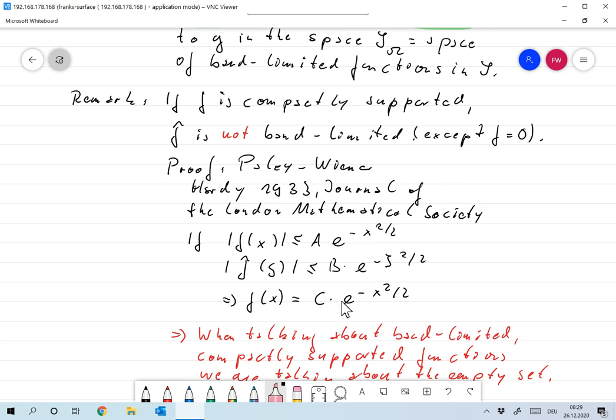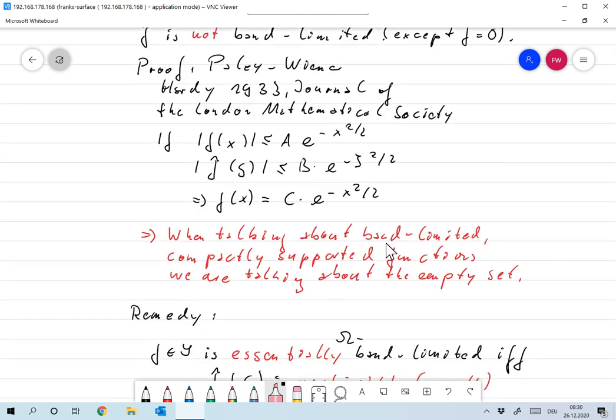Okay, so that's bad. And so we find that if we're talking about band-limited, compactly supported functions—and we always had compactly supported functions up to now; we always assumed that for the Radon transform our functions were supported in the unit circle—then we're actually talking about the empty set. There are no omega band-limited functions in that set except for f equals zero.